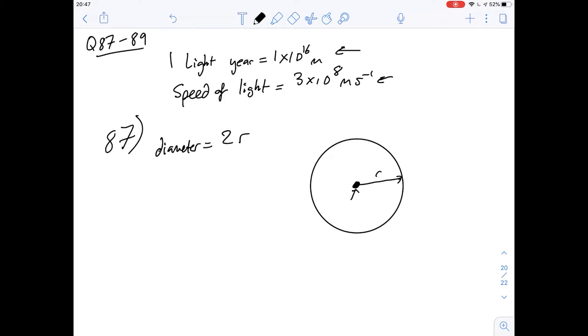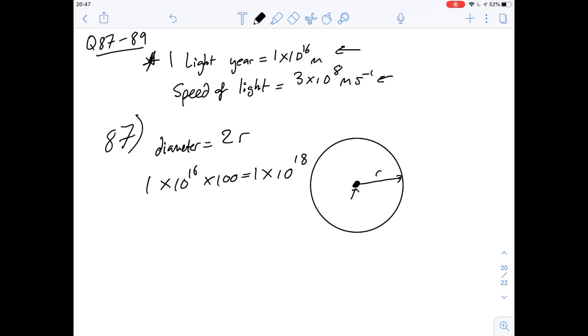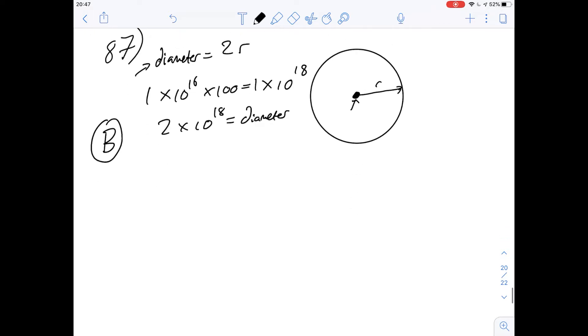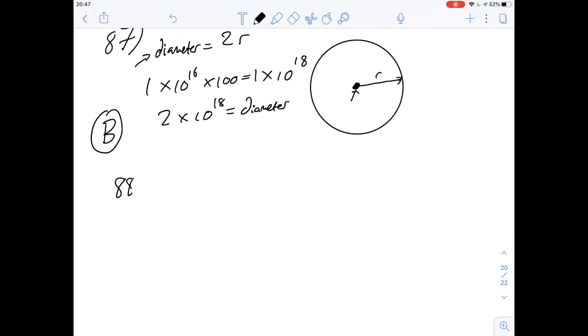We've been asked about diameter though so we need to remember that diameter is going to be twice the radius. Okay so we've been told the distance that is travelled in one year so the distance travelled in 100 years is just going to be that multiplied by 100 so 1 times 10 to the 16 multiplied by 100 and that gives us a value of 1 times 10 to the 18 and again we have to remember that we have to multiply it by 2 so that gives us 2 times 10 to the 18 for the value of the diameter of this radio bubble. And that gives us then an answer of B for question 87.